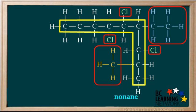Looking closely, we see that there are five groups other than hydrogen attached to this chain. At this point, we have to find the best way to number the carbon atoms in the chain.